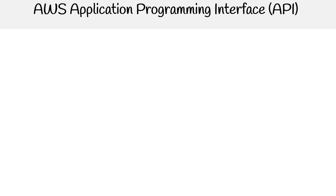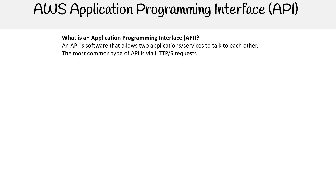We're taking a look here at AWS API. First, let's answer what an API is. That stands for Application Programming Interface. An API is software that allows two applications or services to talk to each other.